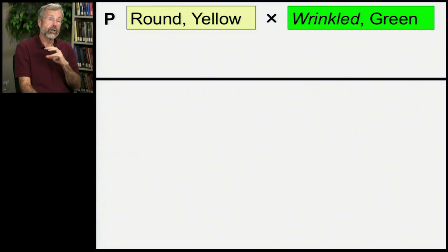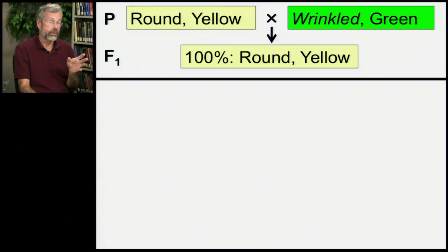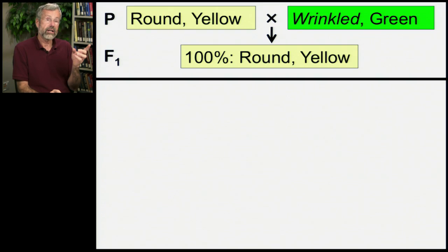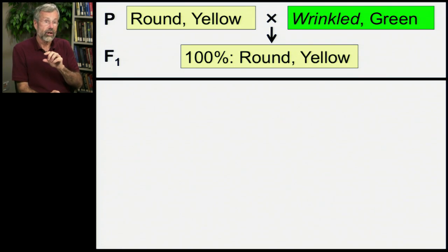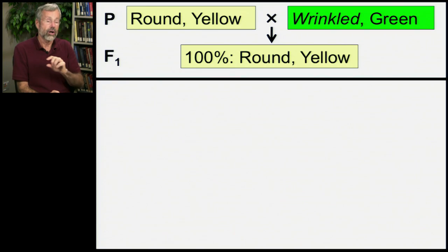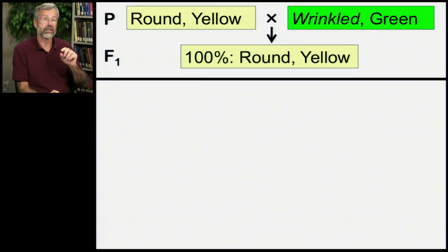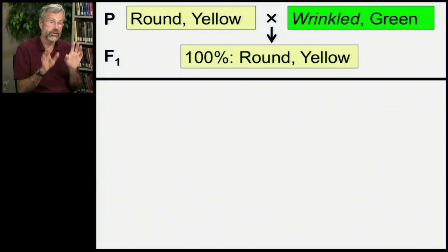So when we cross these, we get an F1 generation. Round is dominant to wrinkle, yellow is dominant to green, and so these are now all heterozygotes, and all of them will be round and yellow. That's the F1 generation — but these are two separate traits.